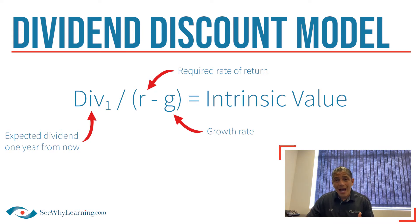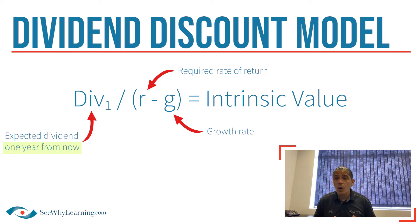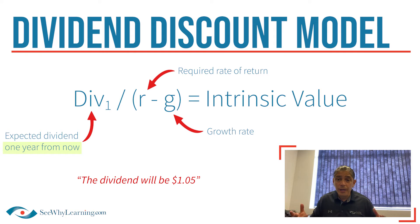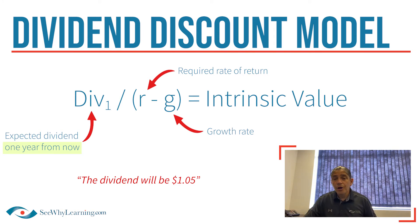Pay close attention to this formula, because if you're asked to calculate the intrinsic value of a stock, the Div1 piece often confuses students. Remember, you need the dividend one year from now, so pay very special attention to the wording in the question. If they say today's dividend is a dollar, you'll have to increase it by the growth rate to find what it will be a year from now. But if they say the dividend will be a dollar five — as though talking about next year — then you wouldn't have to increase it. This is something to be aware of on the exam.